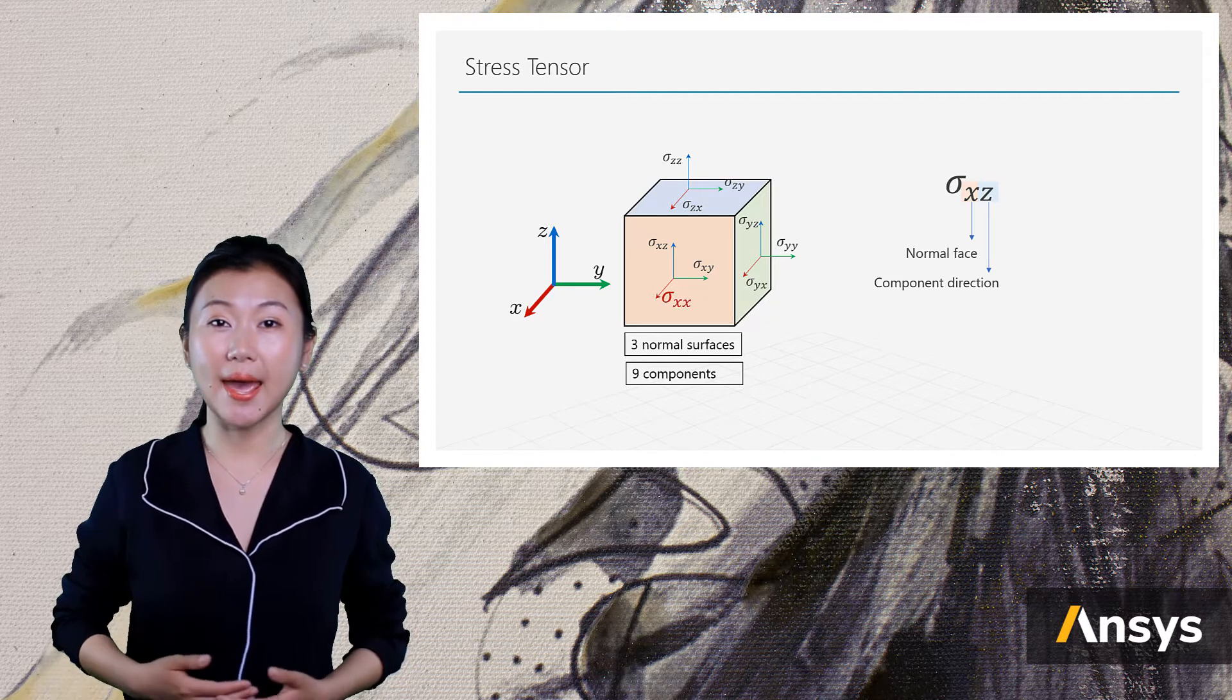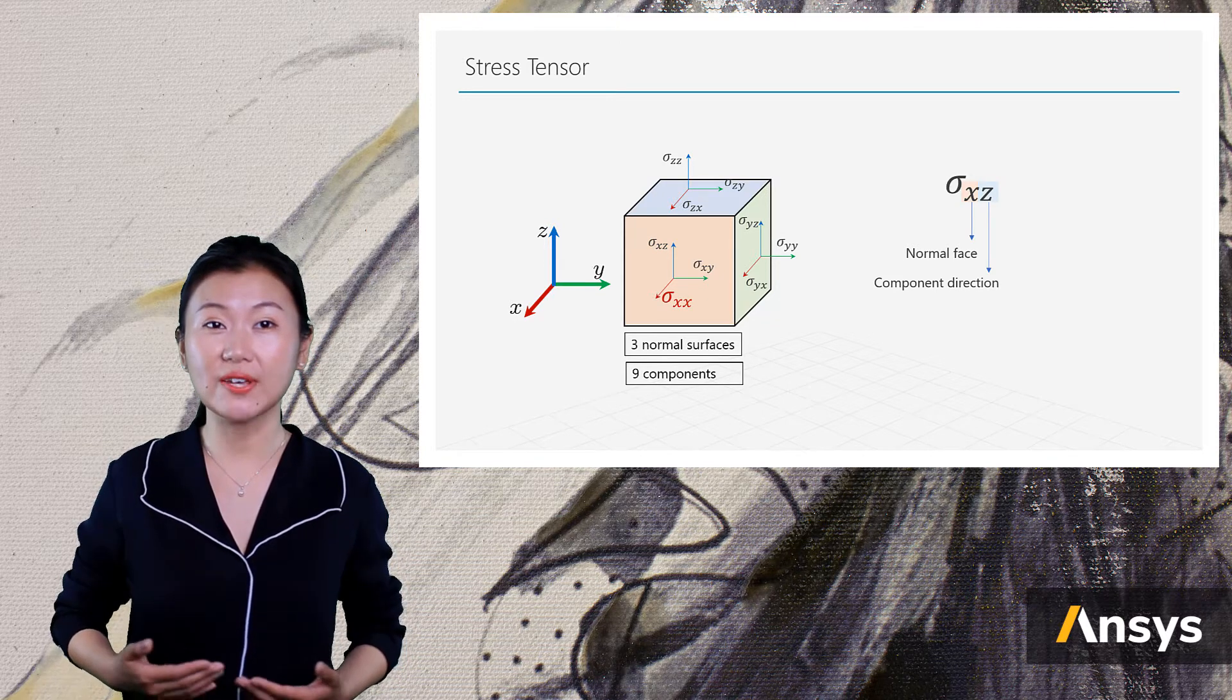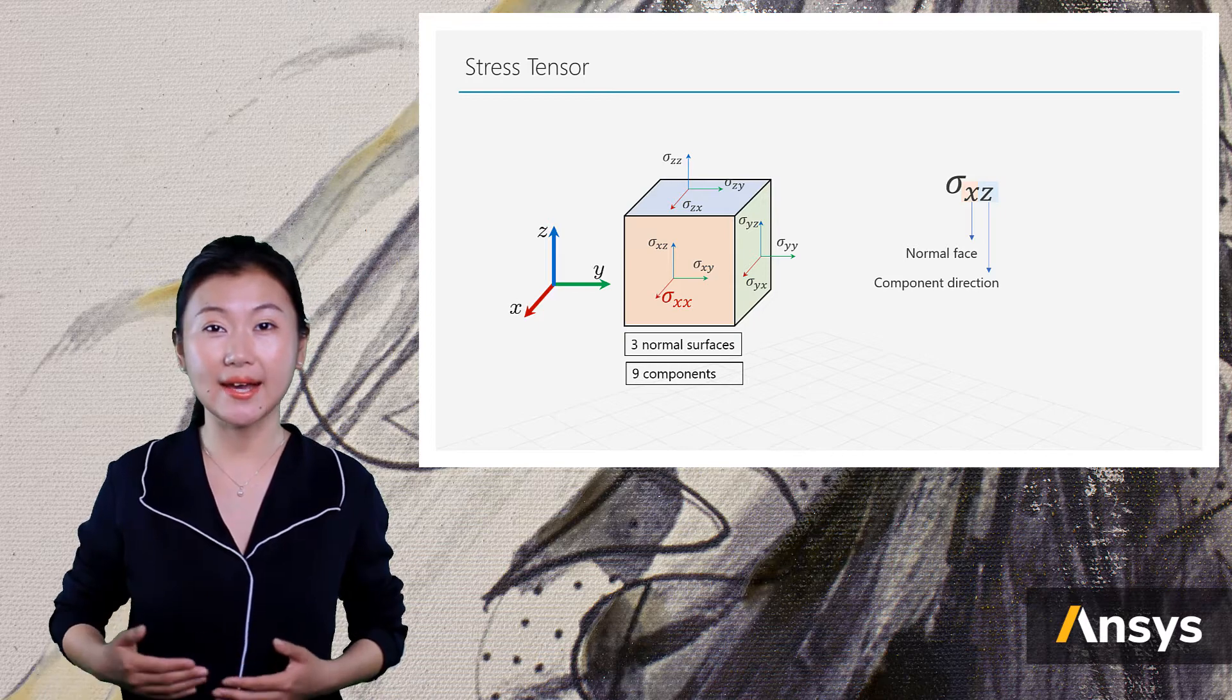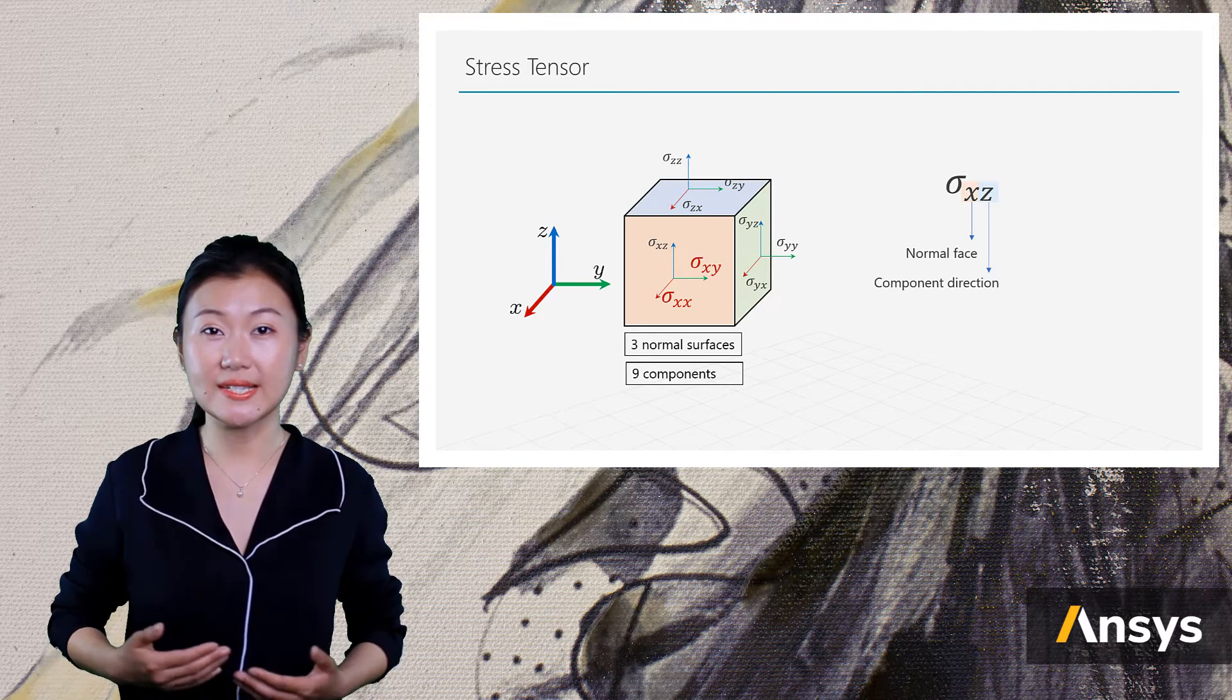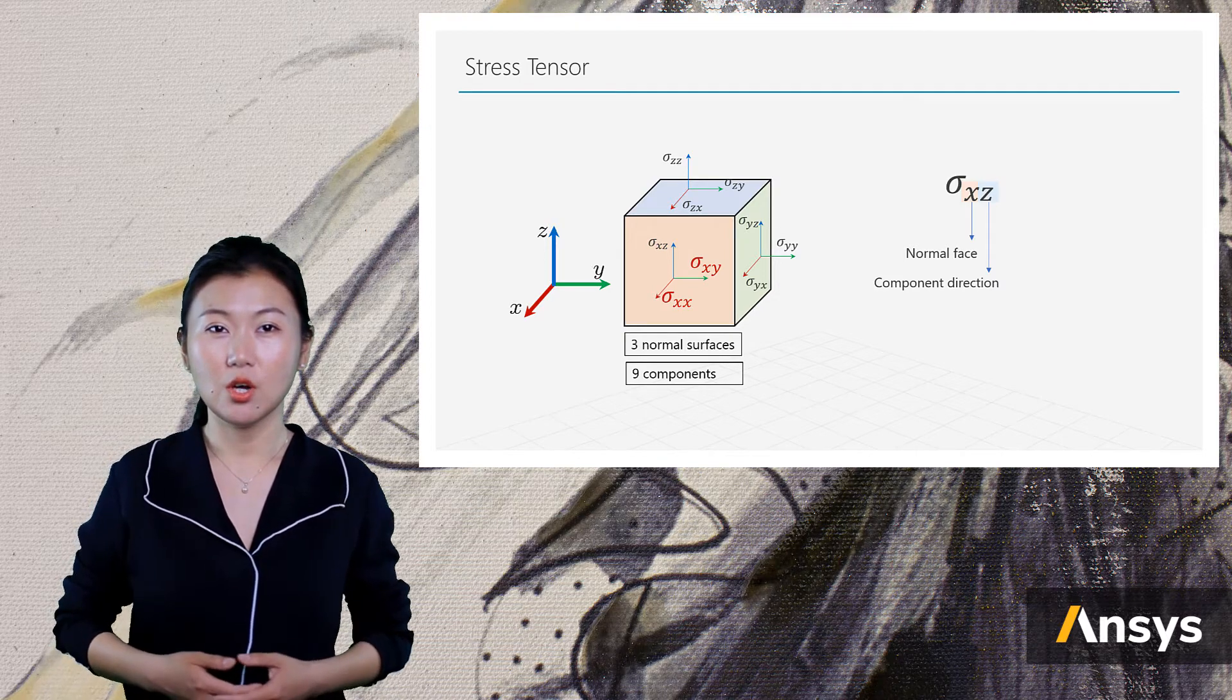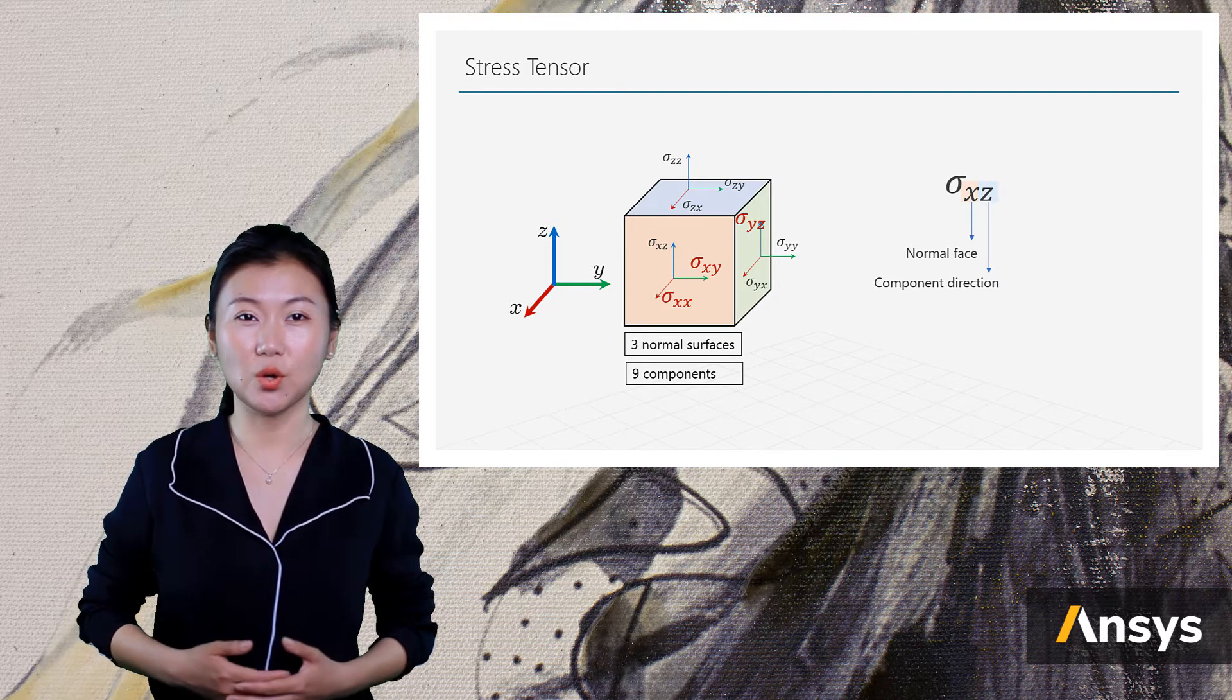For example, sigma xx is the stress component on the normal face x pointing in the x direction. Sigma xy is the stress component on normal face x pointing in the y direction, or sigma yz is the one on the normal face y pointing in the z direction.